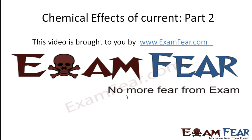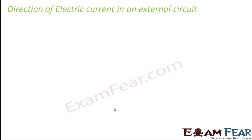This video on chemical effects of current part 2 is brought to you by examfear.com. Current is nothing but charges flowing through a circuit, but in which direction do these charges flow? Since we have two terminals — a positive terminal and a negative terminal — we need to understand whether current flows from positive to negative or from negative to positive.